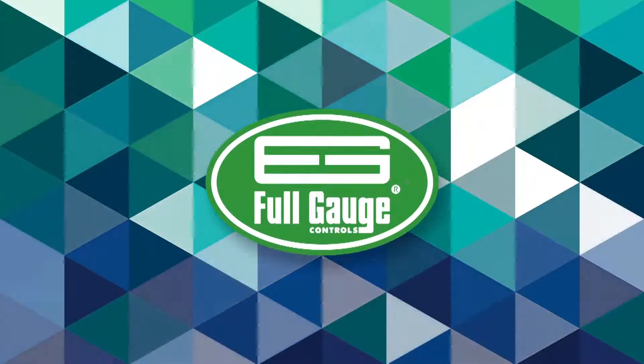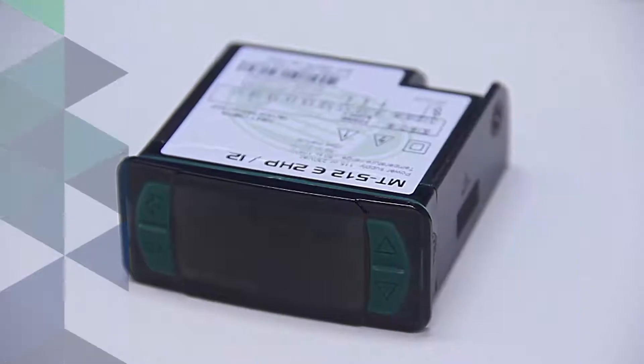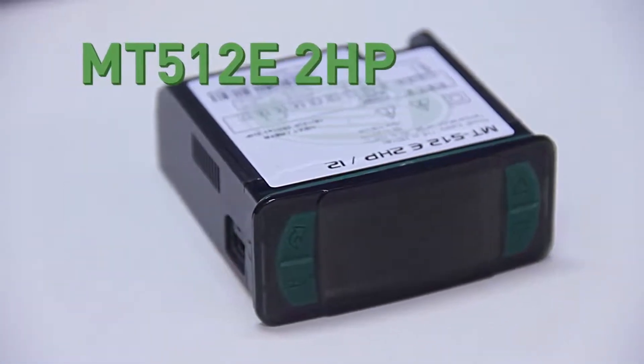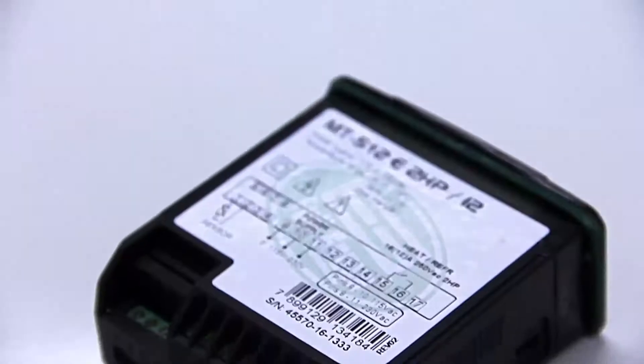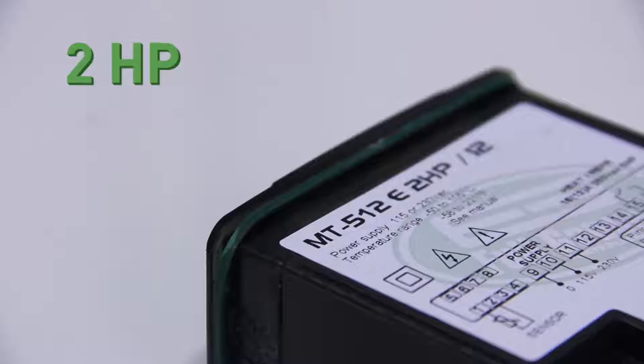Full Gauge Controls introduces the MT512E 2HP instrument of the Evolution line. It's a highly versatile product which can be applied in cooling and heating controls. Through its powerful relay, it picks up loads up to 2 horsepower.